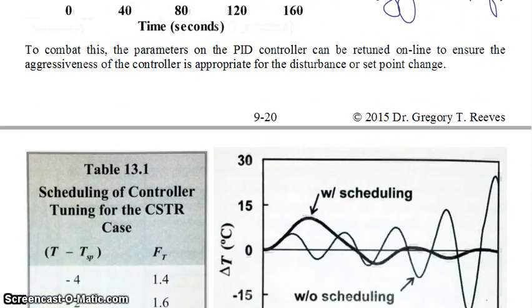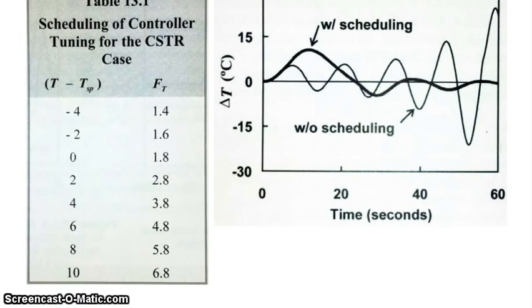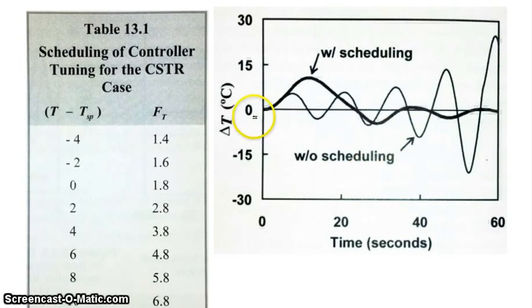So for example, and this is called controller scheduling, right? Because what you have, I mean it's an old school term, but what you basically have is you have a schedule or a table which says, okay, so if the difference between my product temperature and my set point becomes this value, then I want to make a parameter called FT take on this value. If my difference in objective and set point is this value, then I want the value of some tuning parameter FT to be this value, etc. And so this is called scheduling.